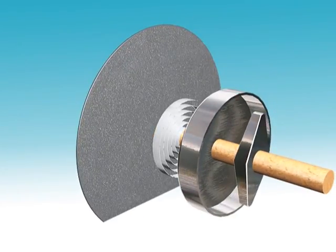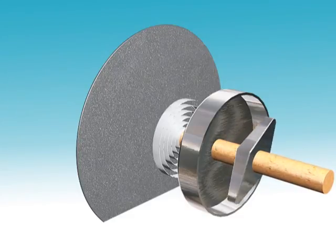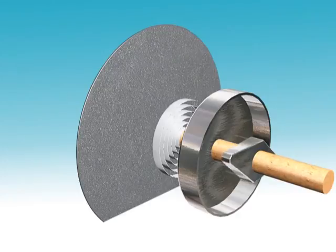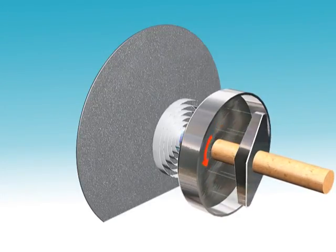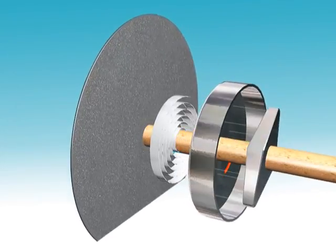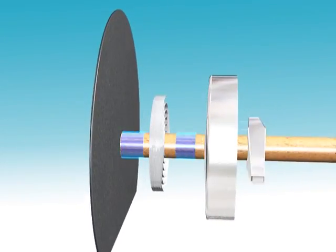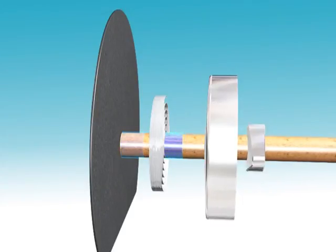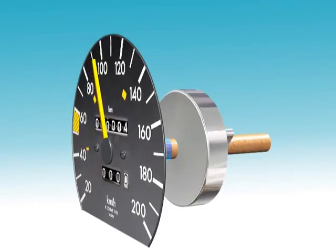When the magnet rotates, it produces eddy currents in the drum. Due to the effect of eddy currents, the drum tries to oppose the motion of the rotating magnet. In turn, the drum experiences a torque and gets deflected through a certain angle. A pointer attached to the drum moves over a calibrated scale, which directly indicates the speed of the vehicle.